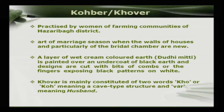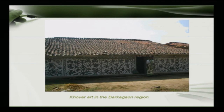The paintings are then engraved on this layer using combs or with hands. This type of painting is similar to ancient techniques like Graffito from ancient Greece and engraved pottery from the Indus Valley civilization. The white Dudimitti is applied over the black wall, and simple designs are made for decoration purposes, mainly used during marriages.